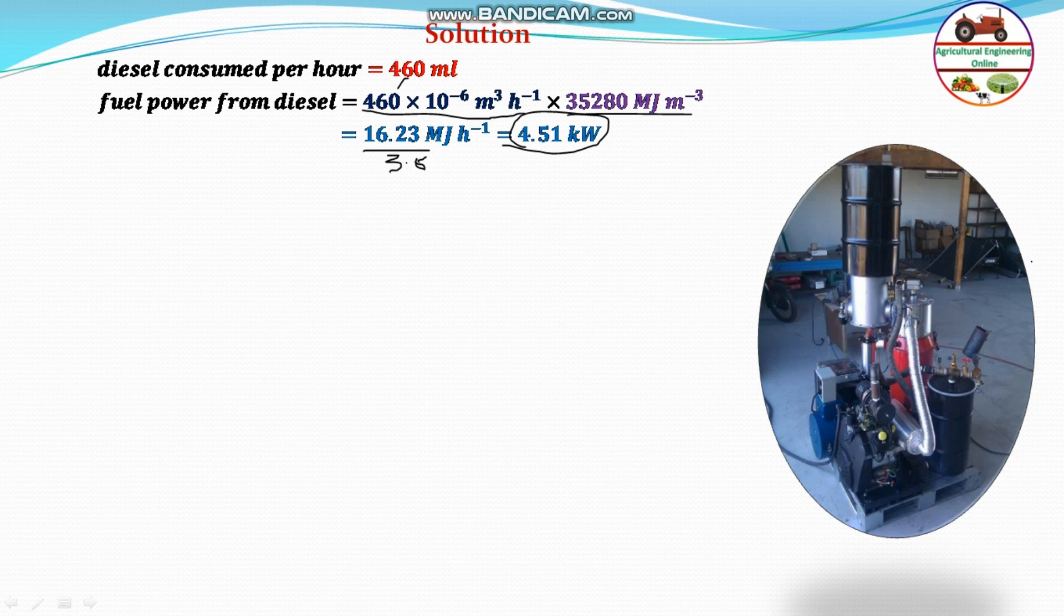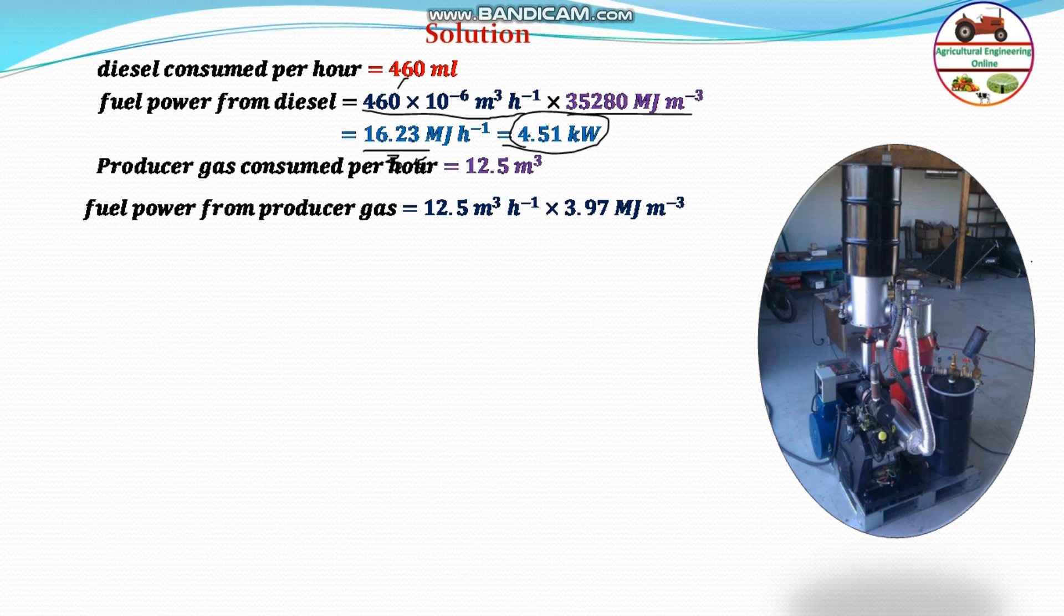Next, coming to the producer gas. Producer gas consumed per hour is 12.5 cubic meters. The given calorific value of the producer gas is 3.97 megajoules per cubic meter.